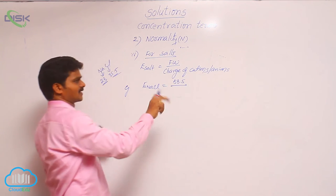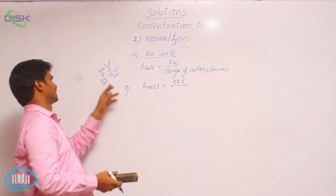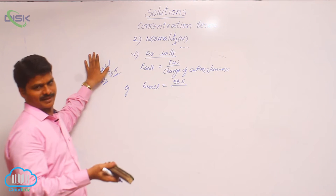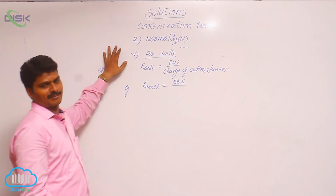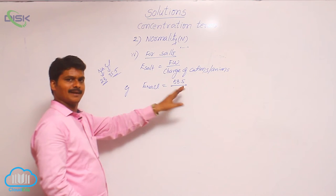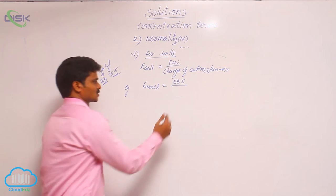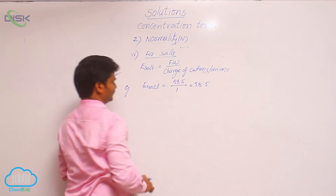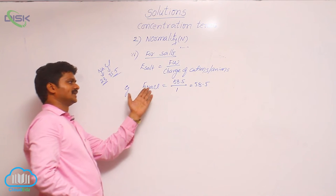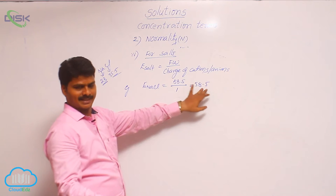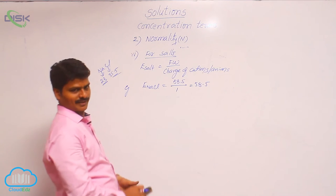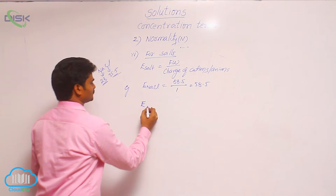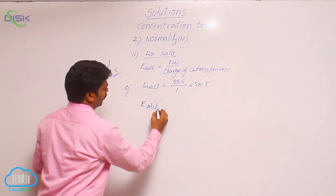In sodium chloride, the charge of the cation is +1 and the charge of the anion is −1; we take the magnitude only, so n-factor = 1. Therefore equivalent weight of NaCl = 58.5 divided by 1 = 58.5, so equivalent weight equals formula weight.